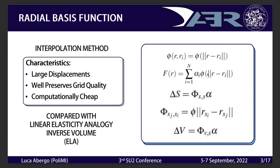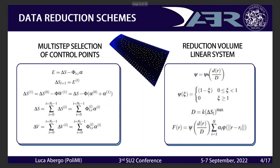In the past, RBF was already used for shape optimization and deformation but was computationally expensive. Now it is cheaper since we introduced two data reduction schemes. The first is a multi-point selection of control points: we impose a maximum number of control points and select them iteratively. We start with just one point where the displacement is maximum, compute the interpolation field, find where the error is maximum, and add another control point there.